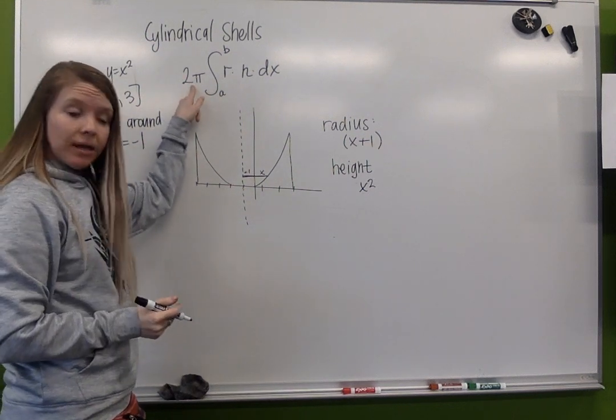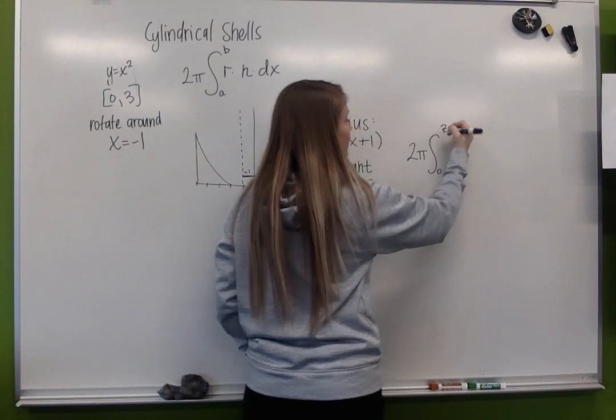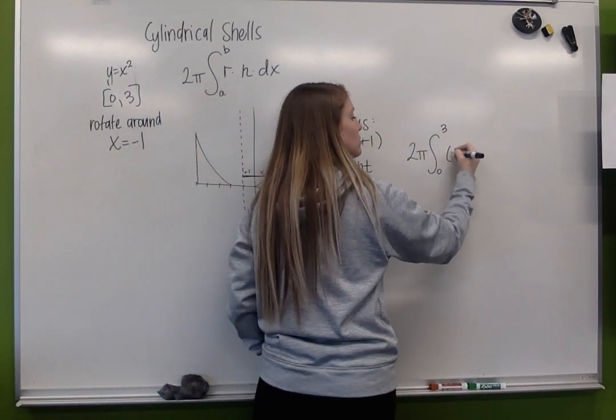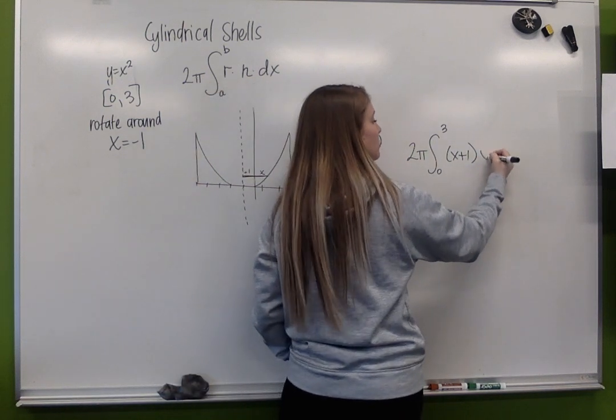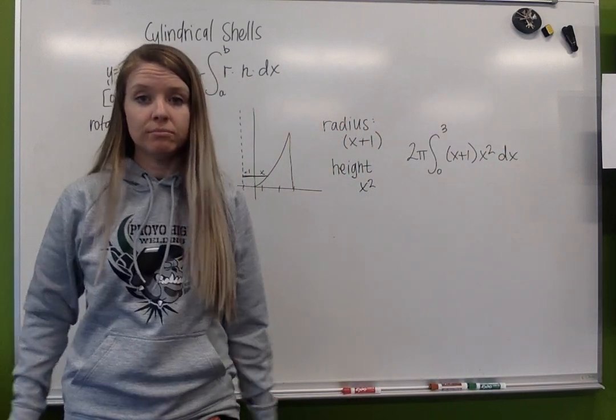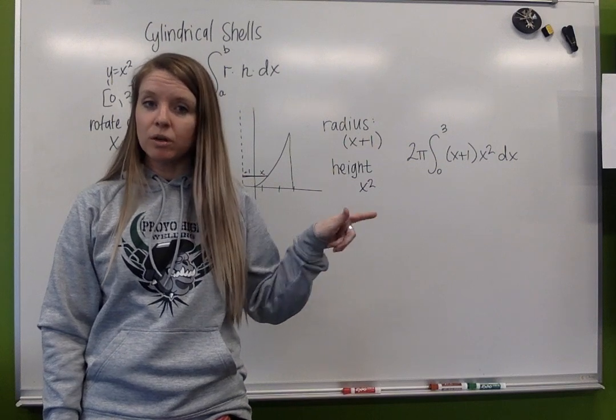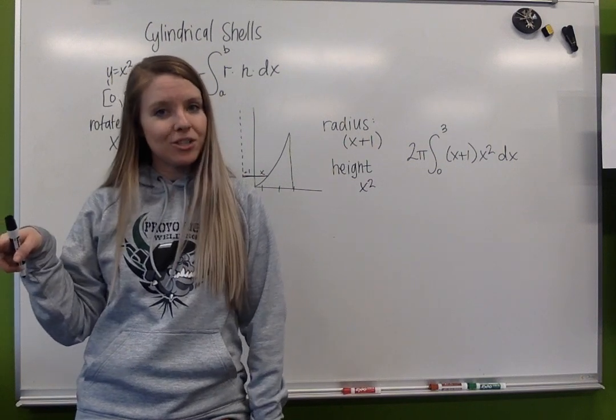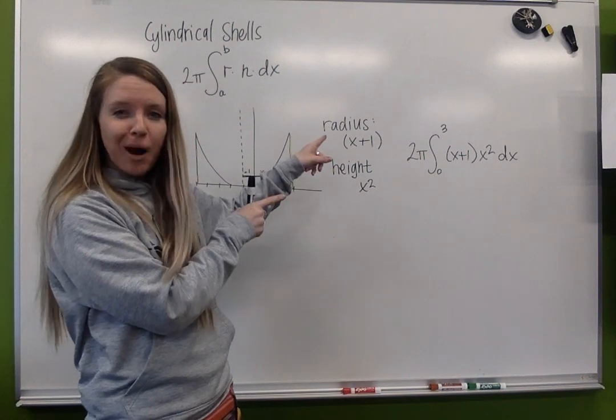So when we plug this in here, we're going to have 2 pi from 0 to 3, my radius, which is x plus 1, times my height, which is x squared. And that's my function. I can integrate it by hand, which I'm going to do real quick, because my answer key that I made for myself is wrong. But this is right. Promise.